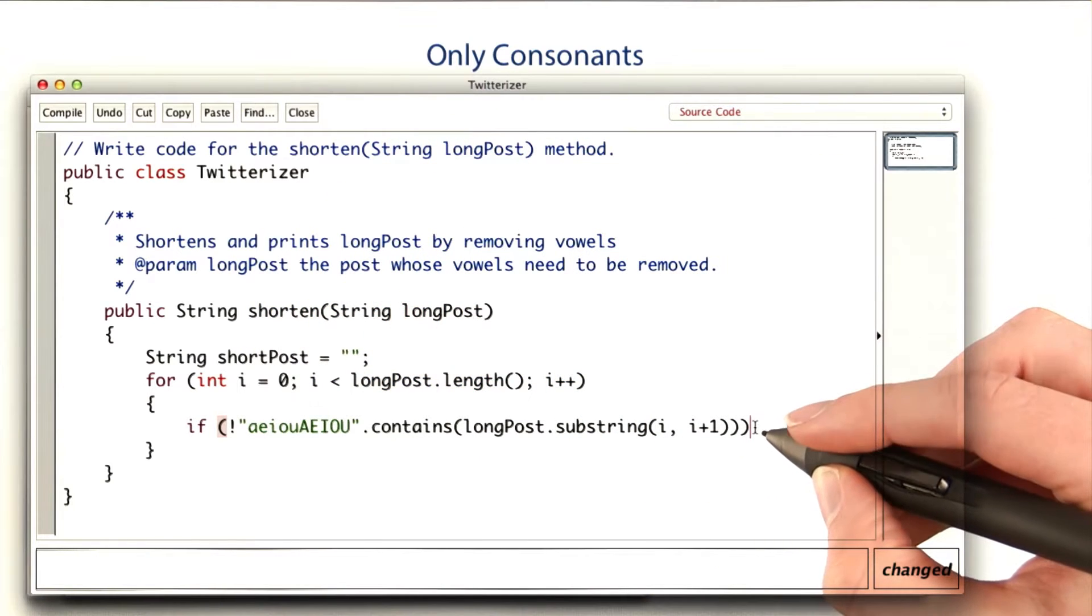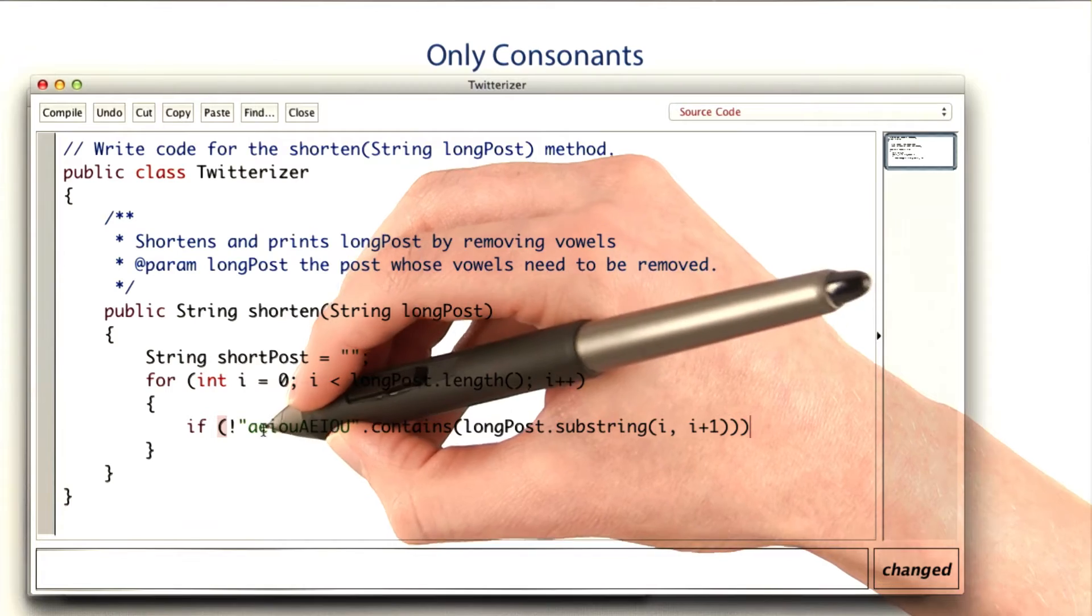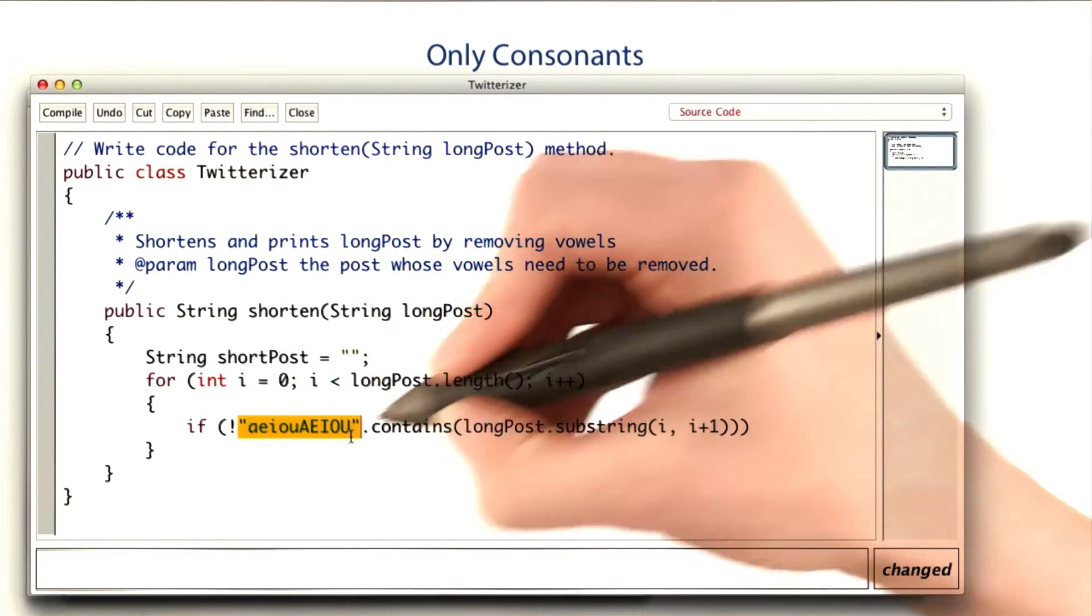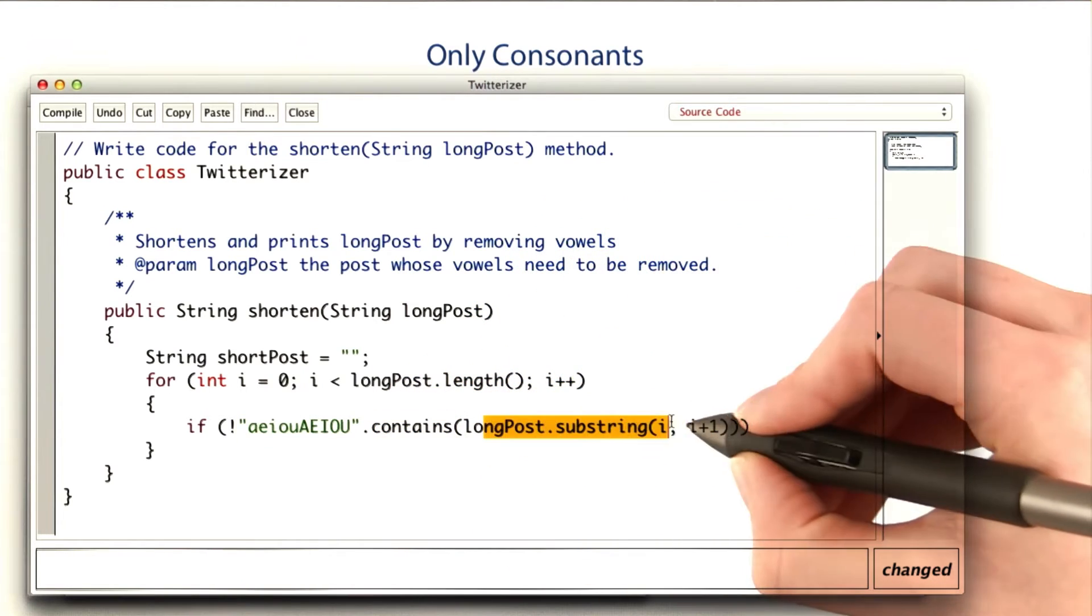We've written conditions to look for things that are not vowels before. This is a different way of doing it. Instead of using if it's A or E or I, I made a string that contains all vowels. And then I ask that string if it contains the letter I'm looking at.